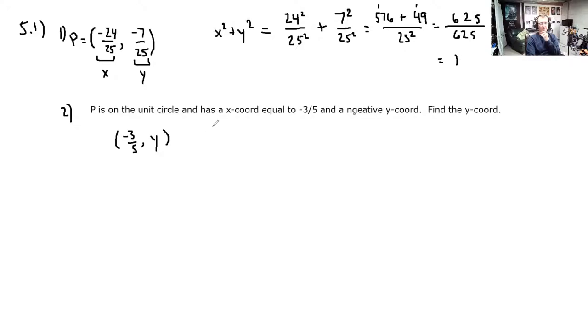So it's almost like we don't have enough information. But we do because we know it's on the unit circle. Which means, just like in problem 1, if we square both of these, what are we going to get? We're going to get 1. Because it's on the unit circle. So here we go. This is how we do it. So 9 over 25, that's negative 3 over 5 squared, plus y squared is 1.